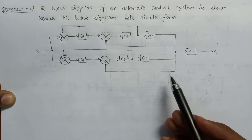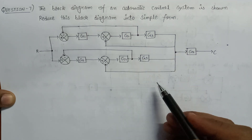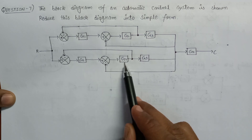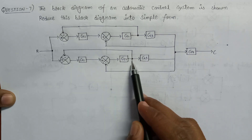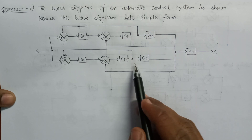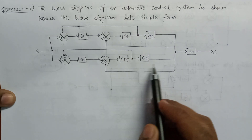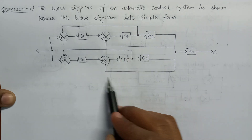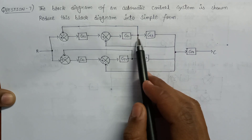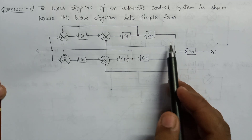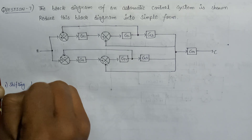Let us analyze this whole system in more depth and find out the point of initiation from which we have to start reducing this block diagram. Here G2 and G3 are connected in series, but this takeoff point is creating a problem. If we shift this takeoff point to the right-hand side, then G2 and G3 come in series. Our first step is shifting the takeoff point after G3.